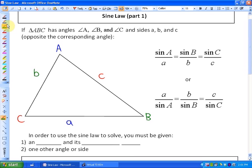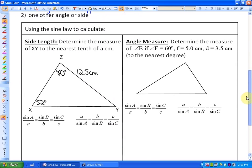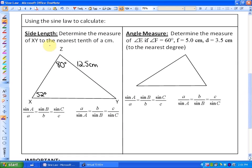In order to use the sine law, here's what must be the case. You must be given an angle and its opposite side and one other angle or side. So let's move into two problems. There's always two types of ways to solve sine law. In some cases, you may be asked to solve for a side length, which is what we'll do first. In other cases, you may be asked to solve for an angle measure.